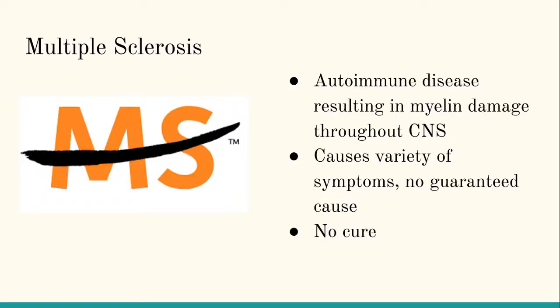A little bit of background: multiple sclerosis is a demyelinating autoimmune disease, so it results in myelin damage throughout the central nervous system. This causes a variety of symptoms like mobility and vision issues. There's no guaranteed cause — different demographic, environmental, and genetic factors all contribute to the likelihood of getting MS.